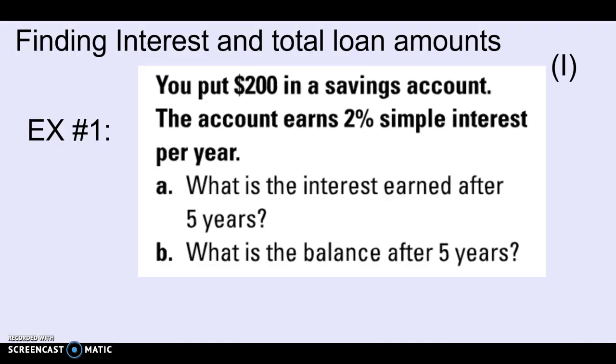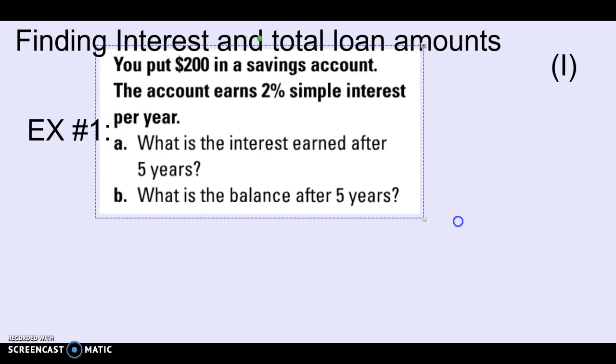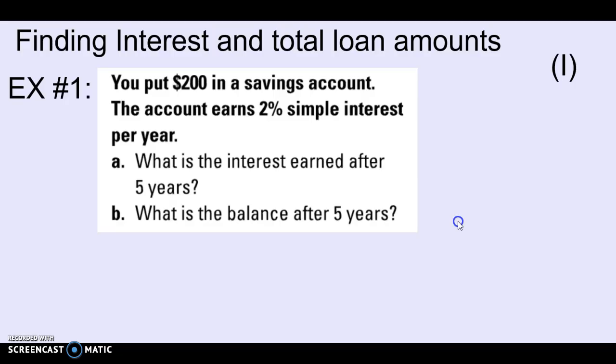All right, example one, finding the interest. You put $200 in the savings account. So here you're going to earn 2% simple interest per year for your money sitting in that account. So the questions are what is the interest earned after five years, and what is the balance after five years? So I'm going to put this so I have a little bit more room. So let's label what information we have. They tell me that I have $200 to put in the account. That would be my principal. 2% interest rate is my rate. And then they're telling me that I'm looking at five years. So that's my time.